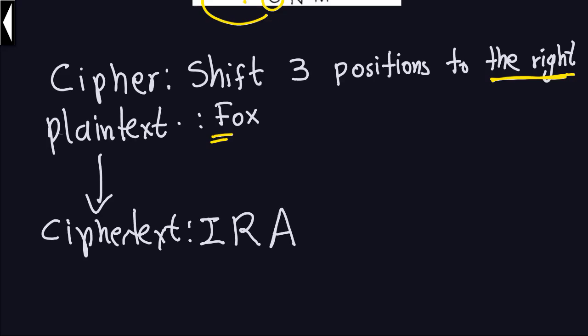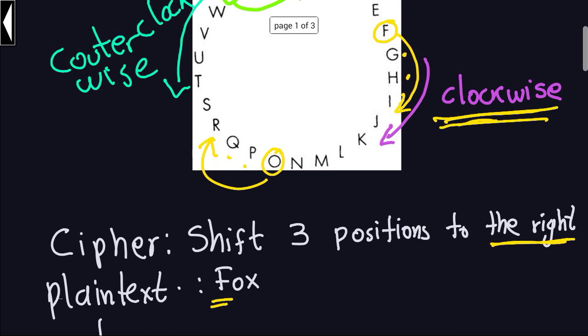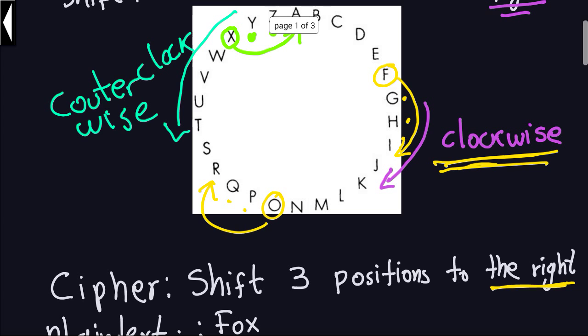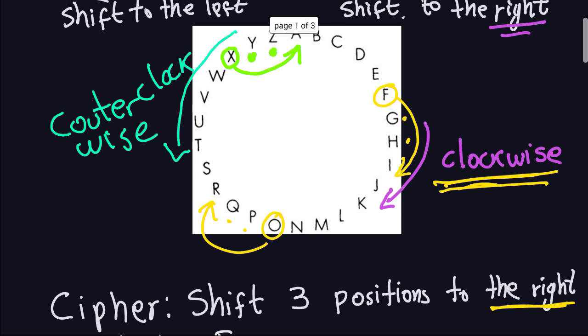The only reason I wanted to emphasize this is because let's just think from now on that our letters, the capital letters in the English alphabet, are organized in this circular position. Clockwise means moving to the right the number of positions that the cipher tells you. And moving to the left will correspond to going counterclockwise in this direction.